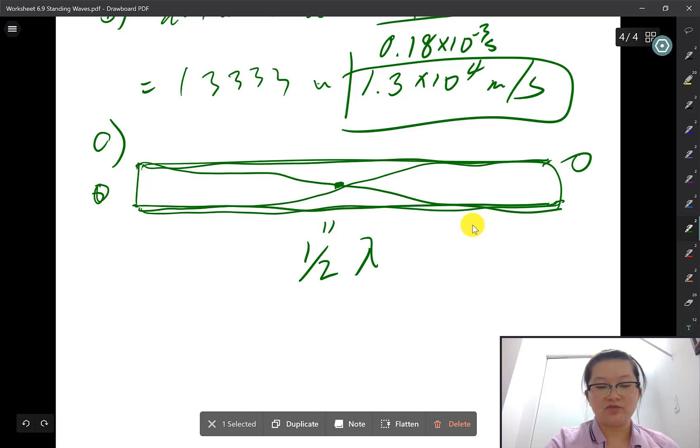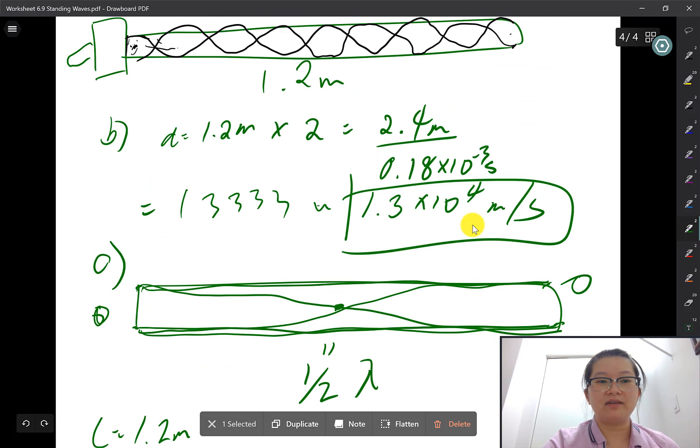If the length of our rod is 1.2 meters and that's half a wavelength, then the full wavelength must be twice the length: 1.2 meters times two equals 2.4 meters.